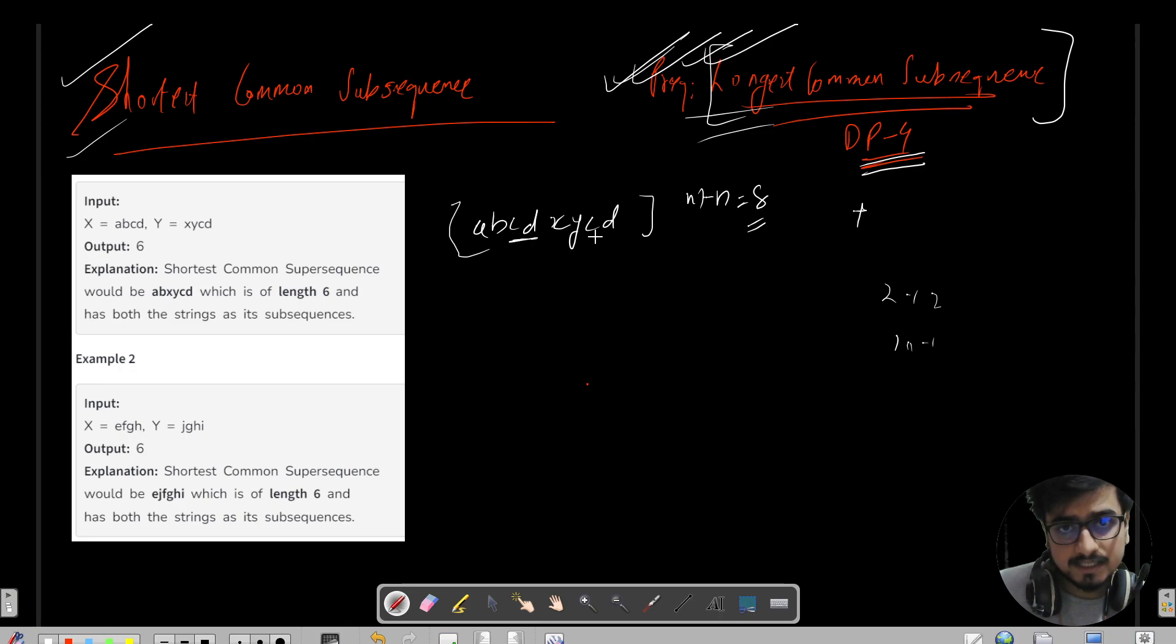You can clearly see that C and D have been there twice. One CD is present in the string ABCD and other CD is present in XYCD. So can I remove this CD and I can say ABCD and XY?